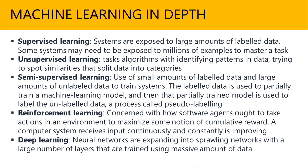The first type is supervised learning, in which systems are exposed to large or big data of labeled data. The key word to focus on and remember here is labeling. All of your data is labeled or contains a label, and some systems may need to be exposed to millions of examples to master a task. This is supervised learning, which is fairly common.